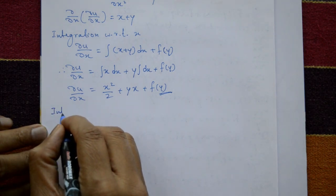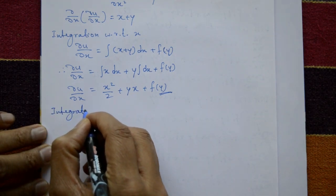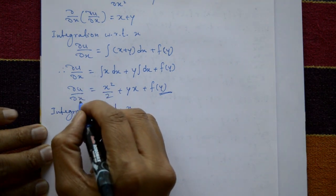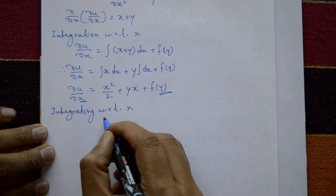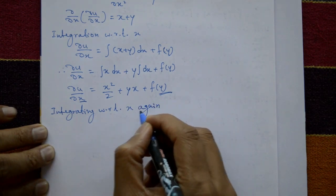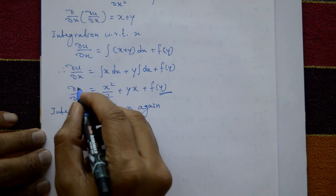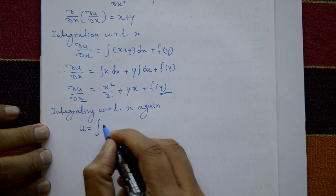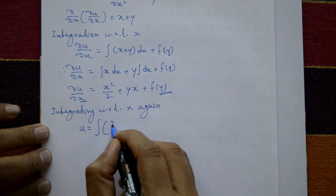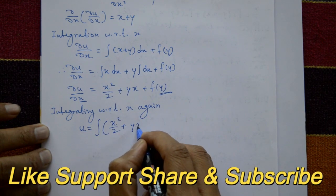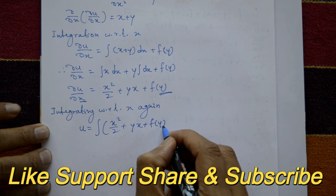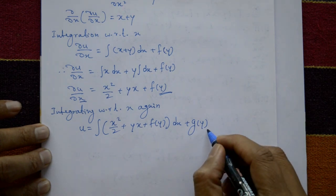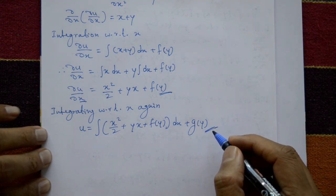Once again integrate with respect to x, because we have ∂u/∂x. After this second integration you get u equal to the integral of x²/2 + yx + f(y) with respect to x, plus another arbitrary function g(y), where g(y) is again an arbitrary function of y only.